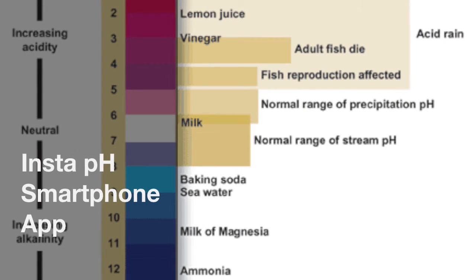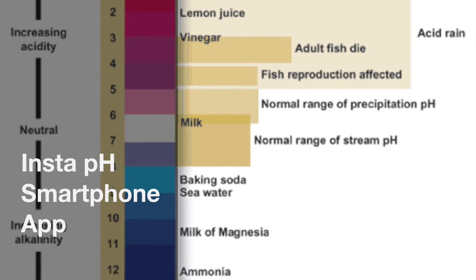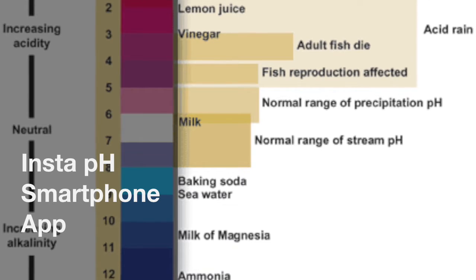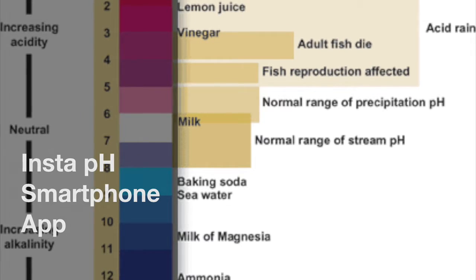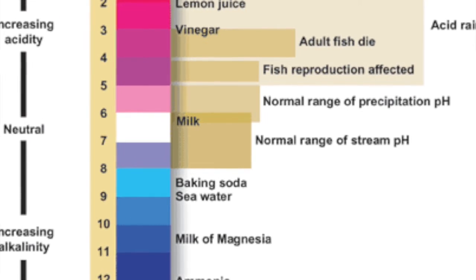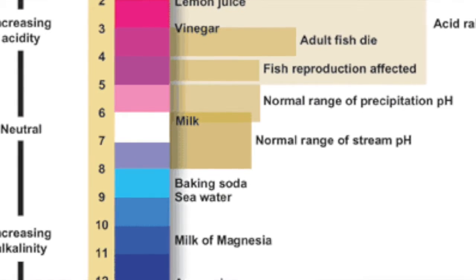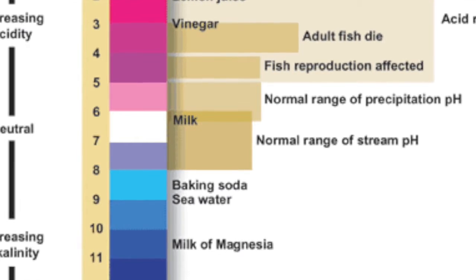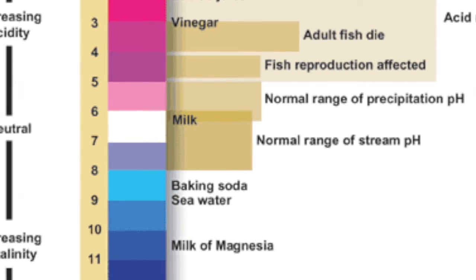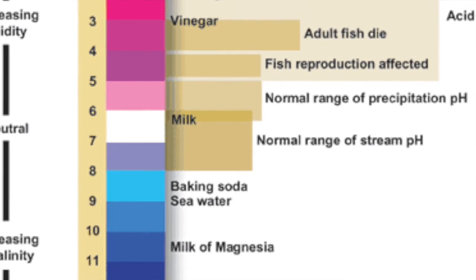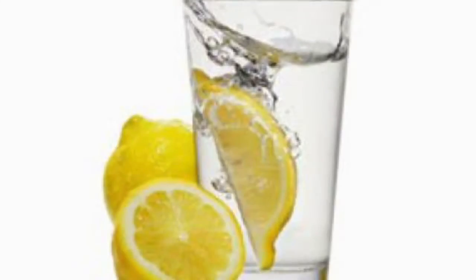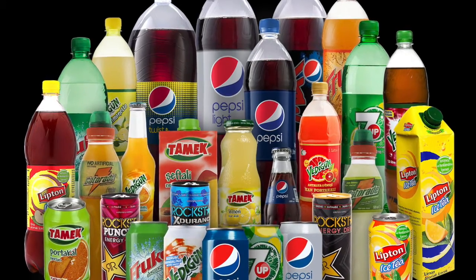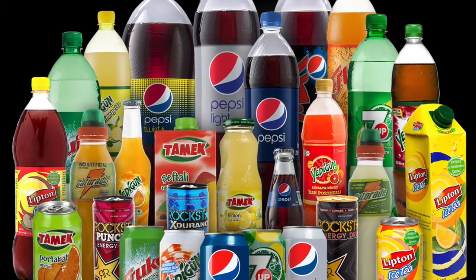pH is a numeric scale generally used to specify the acidity or alkalinity of an aqueous solution. It is the negative logarithm of the hydrogen ion concentration in the solution. Solutions with pH less than 7 are considered acidic and more than 7 basic. For example, lemon water and soft drinks in general are acidic, and water is generally neutral.